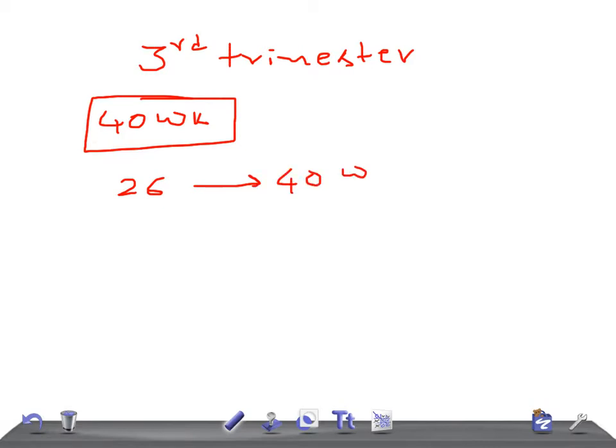Really very important, timing is really very important. First trimester is from conception to 13 weeks, second trimester from 13 weeks to 26, and third trimester from 26 to 40 weeks.